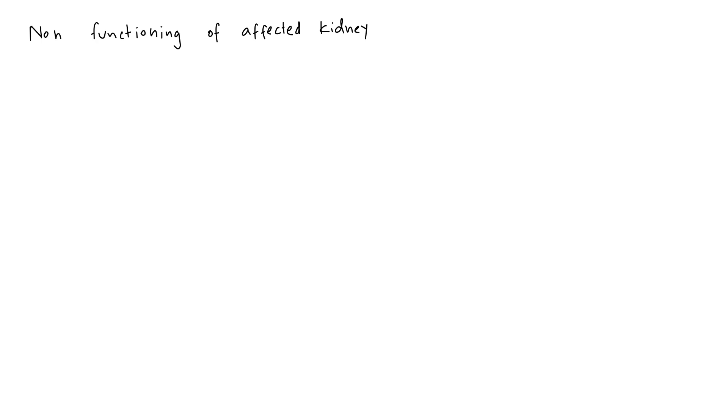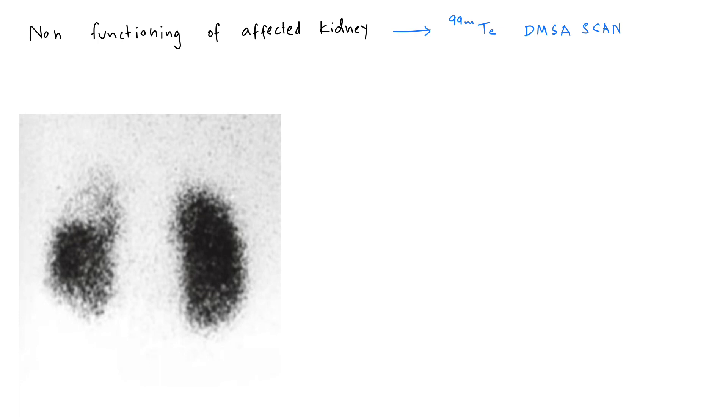To prove non-functioning of the affected kidney, Technetium-99 DMSA scan may need to be performed. In a Technetium-99 DMSA scan, the affected area of kidney shows reduced tracer uptake. Here we can see a Technetium-99 DMSA scan of kidney showing moth-eaten appearance of upper pole of right kidney in a patient affected with segmental xanthogranulomatous pyelonephritis of right kidney.